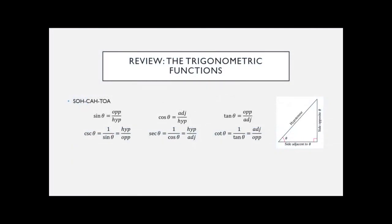Just to review, if you've watched my other videos of our previous section, we've got the trig functions. There's six of them, and their definitions are all in terms of a right triangle where you've got adjacent, opposite, and hypotenuse as your labels on the sides. The shortcut is SOHCAHTOA to remember sine, cosine, and tangent. And then cosecant, secant, and cotangent are the reciprocals.